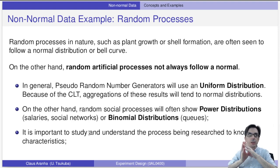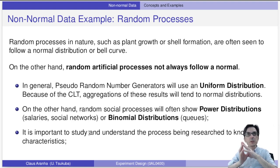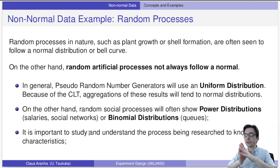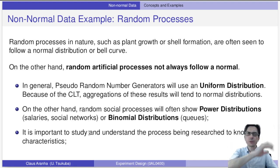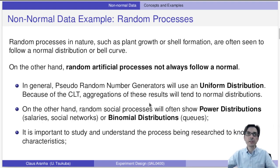Random processes in nature usually follow a normal distribution or something close enough. Random artificial processes don't always — pseudorandom number generators follow a uniform distribution which usually aggregates to a normal distribution, so we don't need to worry about those. However, random social processes like Twitter followers or salaries follow power or binomial distributions that may sometimes violate the CLT, so you need to be careful.